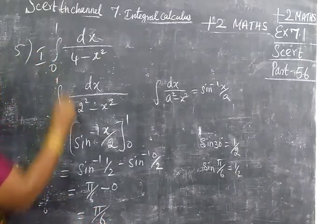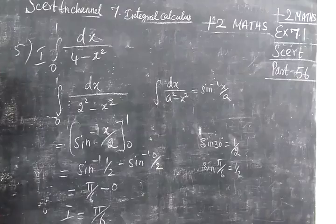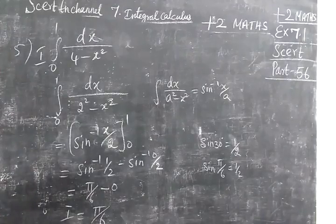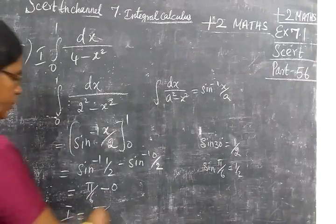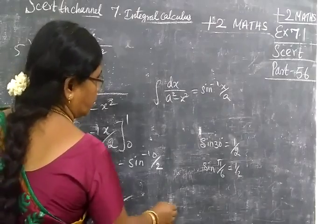Here you are starting I. So I value equal to π by 6. Now we check the answer for that. The answer is I equal to π by 6. So this answer is correct.